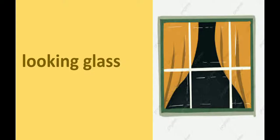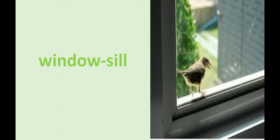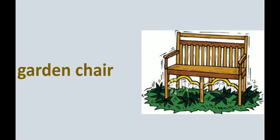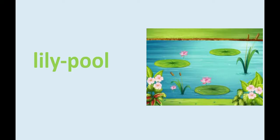Now we will go through the new words, children. 'Looking glass' — the glass of the window through which we can see outside. 'Windowsill' — the bottom part of the window. 'Gravel path' — a road made of small pieces of stones. 'Garden chair' — a chair in the garden where anybody can sit. 'Lily pool' — a pool or pond full of lily flowers.